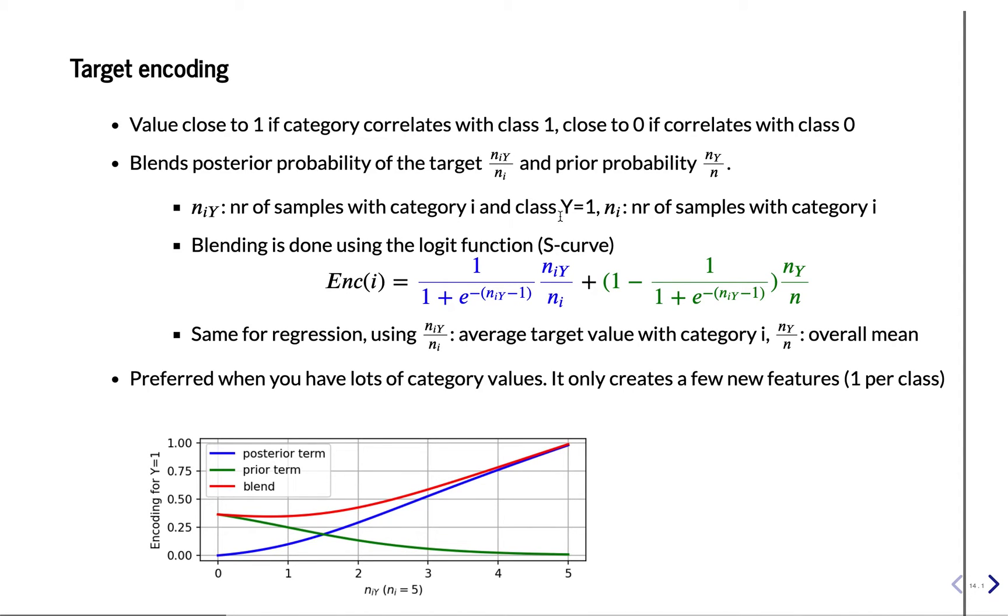Then if you would just do this, then you give a very high value, even though you base it on one example. So there's not a lot of evidence that this feature is actually associated with class one. And still you give the high value.